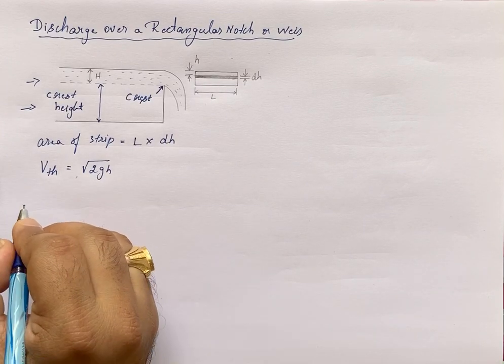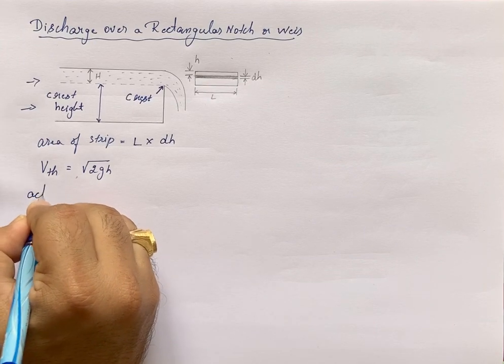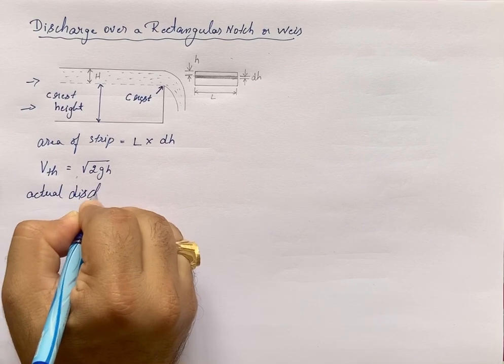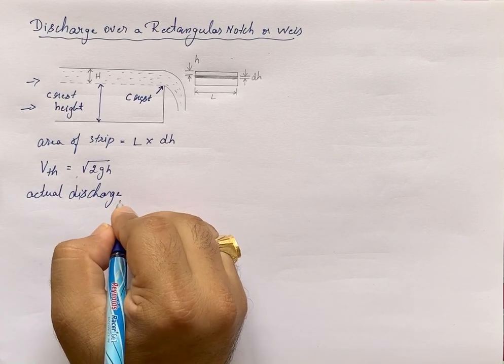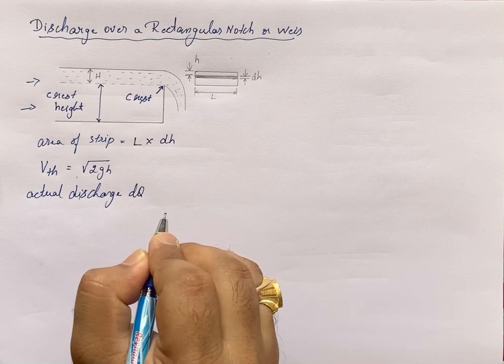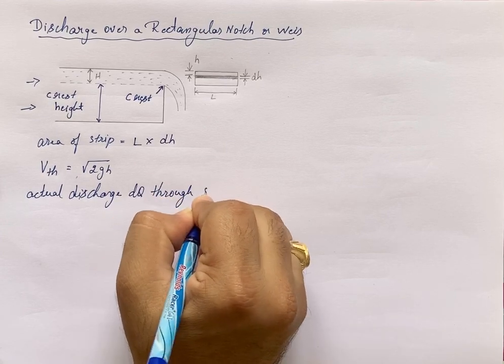Now what is the actual discharge of the strip? Actual discharge dQ is the actual discharge through the strip.